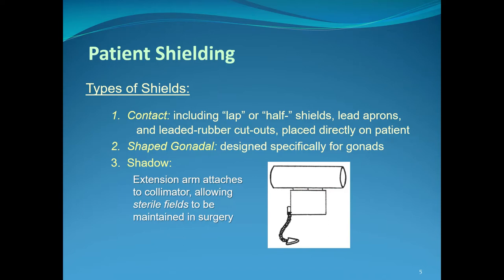We're always shielding the gonads for the most part. There are some other radiosensitive organs like the thyroid, but most of our shielding efforts are to cover the gonads and limit gonadal exposure. To be clear, we can't eliminate the internal scatter radiation that occurs when a patient is exposed to the x-ray beam, but we can stop absorption of backscatter with contact shields, and stop absorption within the gonads of the primary beam — that's the purpose of the shaped gonadal and shadow shields.